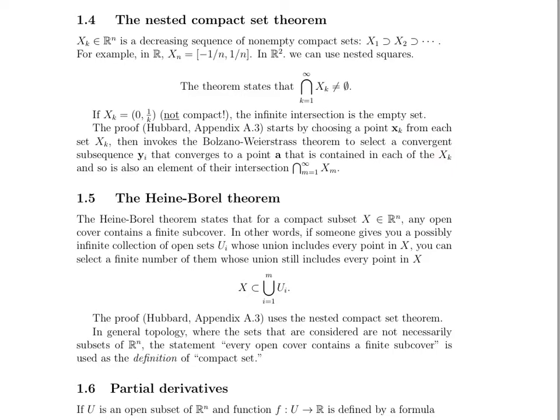Let's take a look at the Heine-Borel theorem. The Heine-Borel theorem states that for a compact subset of Rn, any open cover contains a finite subcover. So you might be wondering what a cover and subcover are. In other words, if someone gives you an infinite collection of open sets whose union includes every point in the set x, you can select a finite number of those open sets whose union still includes every point in x.